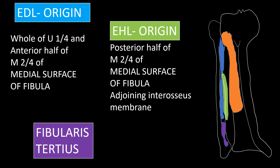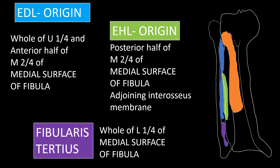The last muscle is the small fibularis tertius. It arises from the whole of the lower one-fourth of the medial surface of the fibula. So looking at the medial surface of the fibula: the upper one-fourth has extensor digitorum longus, the middle two-fourths has two muscles — extensor digitorum longus anteriorly and extensor hallucis longus posteriorly — and the lower one-fourth has only fibularis tertius.